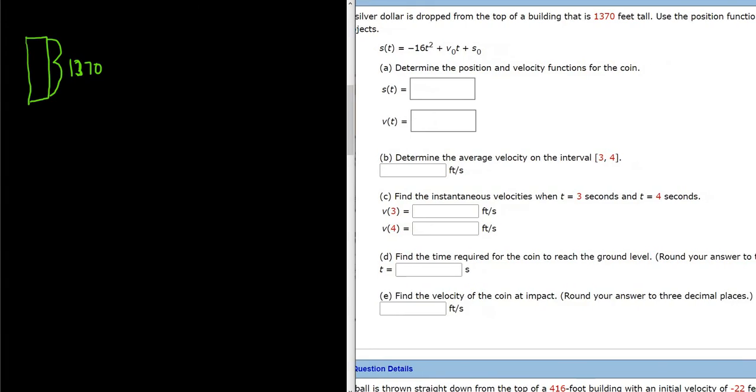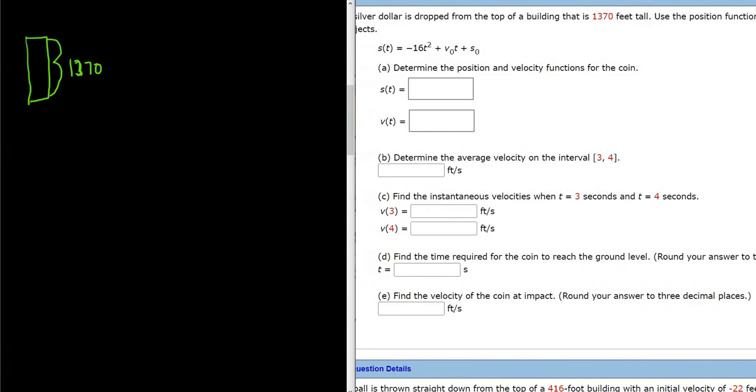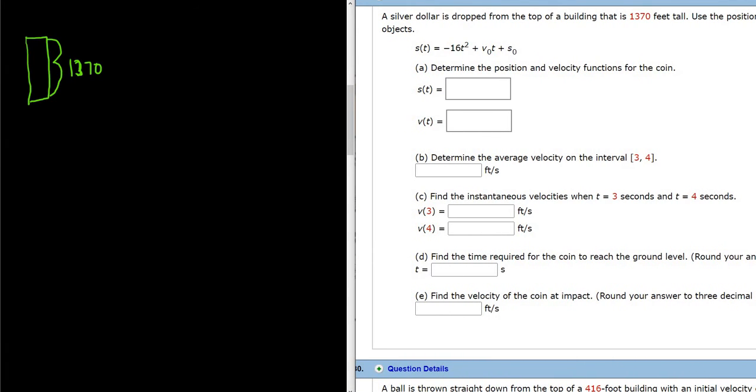Use the position function below for free falling objects. And then it says, determine the position and velocity functions for the coin. All right, so they give us a formula, s(t) equals negative 16t squared plus v sub 0, or v naught t, plus s sub 0, or also it's pronounced s naught.